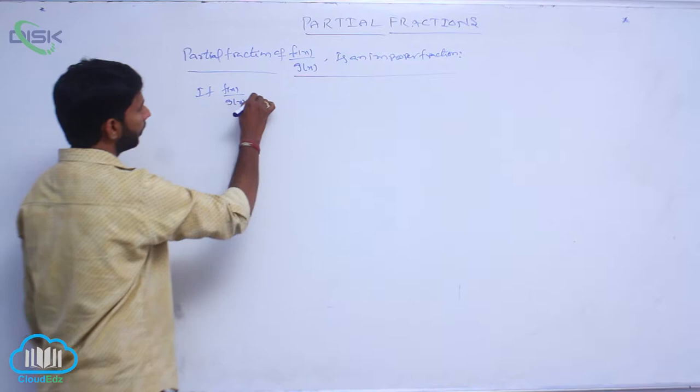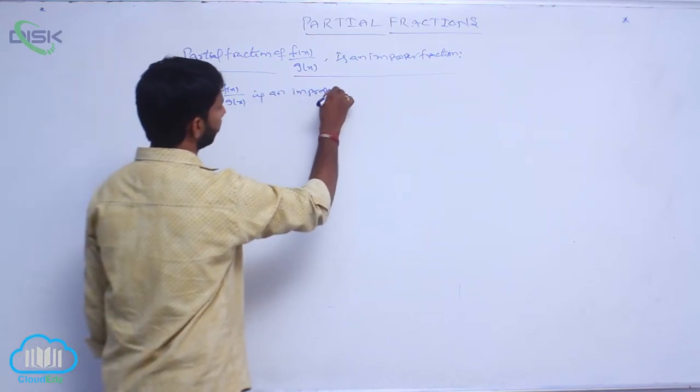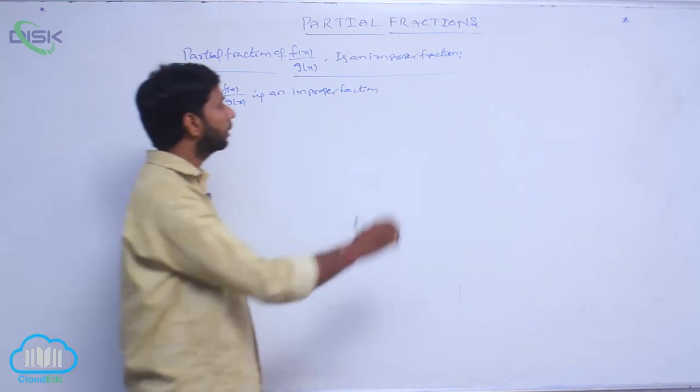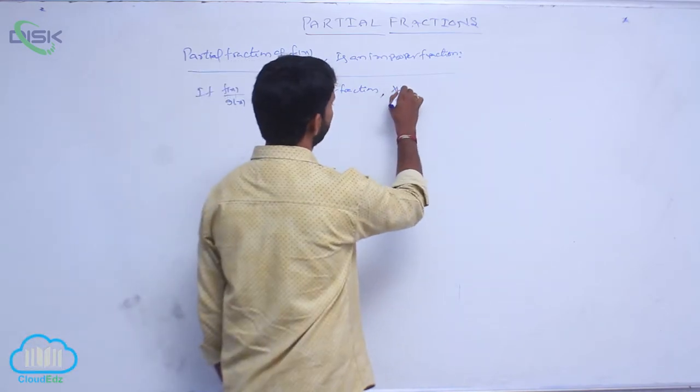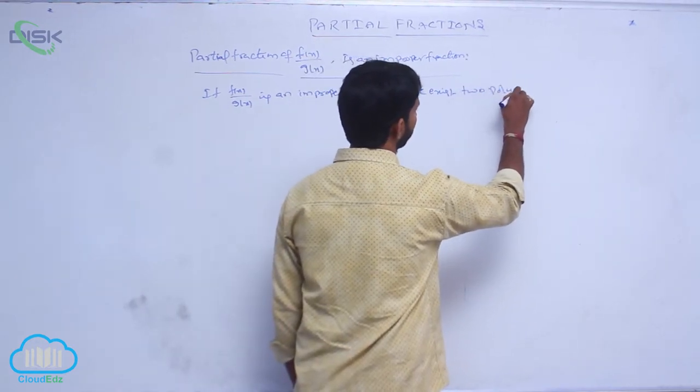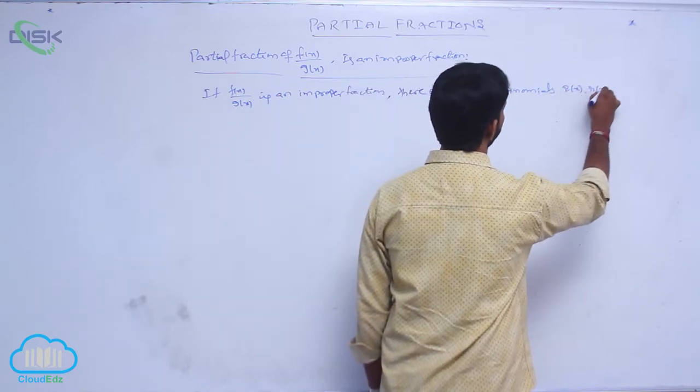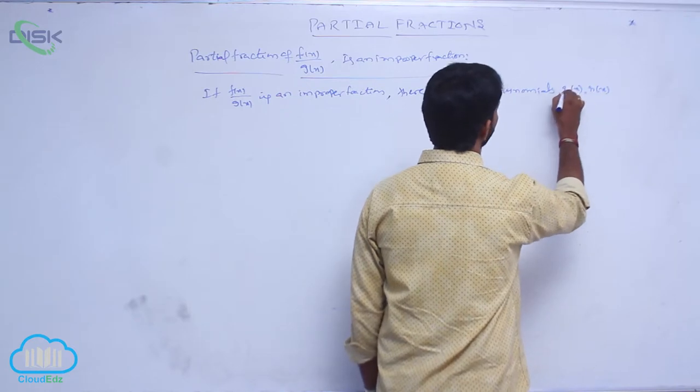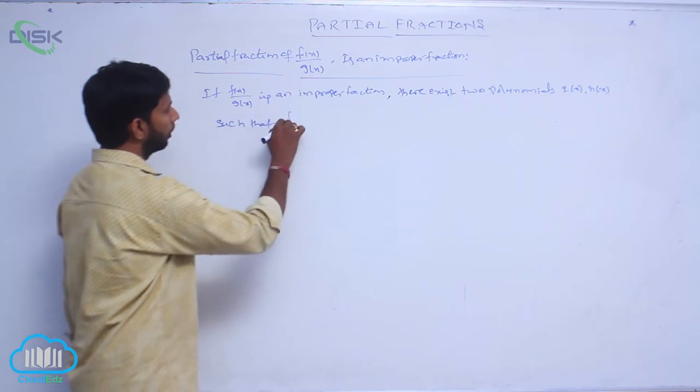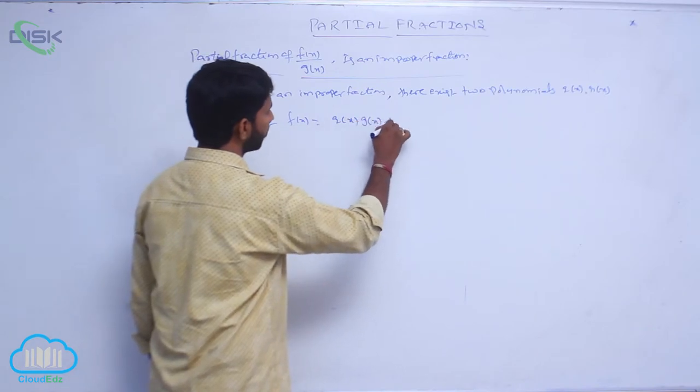If f of x by g of x is an improper fraction, there exist two polynomials q of x, r of x, such that f of x is equal to q of x into g of x plus r of x.